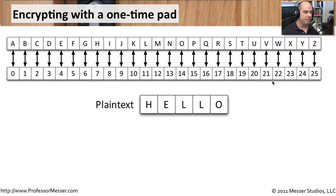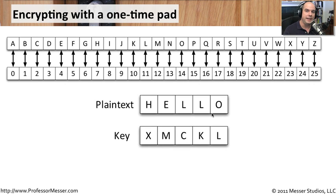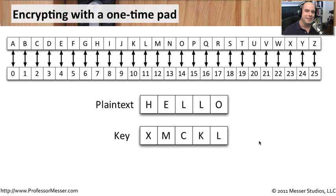Let's take a plain text message like the word 'hello' and encrypt it. To encrypt it, we need a key that's exactly the same size as the plain text. Looking at our one-time pad, our key in this case is XMCKL — a random set of letters. This key will change every time we send a message, so the next time we send 'hello' it will produce completely different ciphertext. We can't perform mathematics on letters, so we need to convert these to numbers.